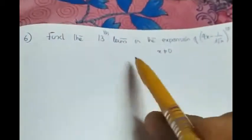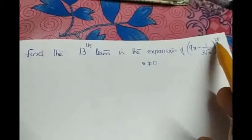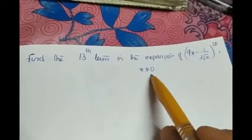The next one. Find the 13th term in the expansion of (9x - 1/(3√x))^18 and it is given that x ≠ 0.